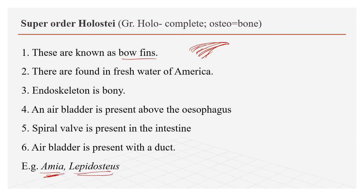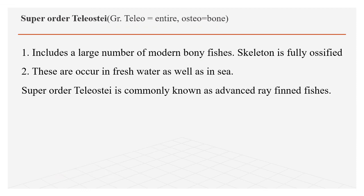The last super order is Teleostei — it includes a large number of modern bony fishes. The majority of fishes belong to this super order. The ray tips are made up of bone. These occur in both freshwater and sea — they are the most advanced fishes.